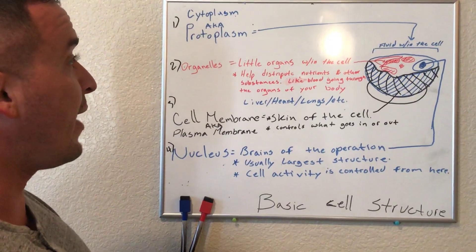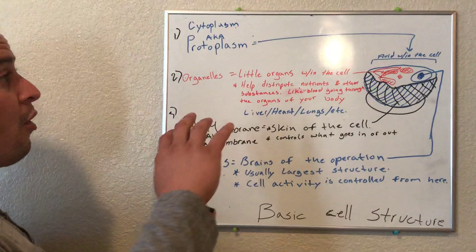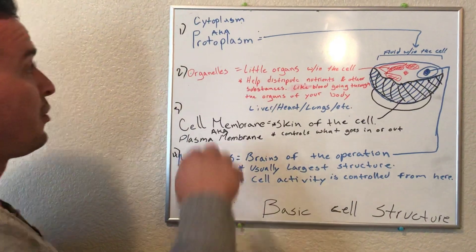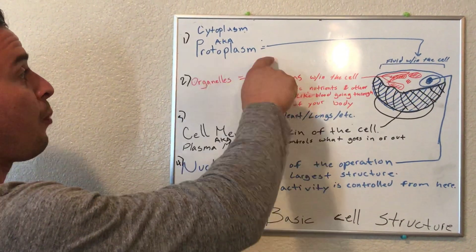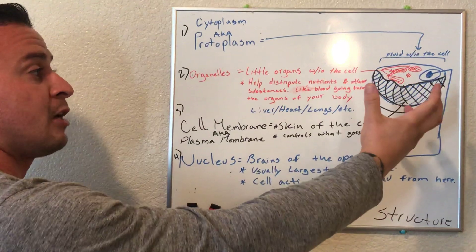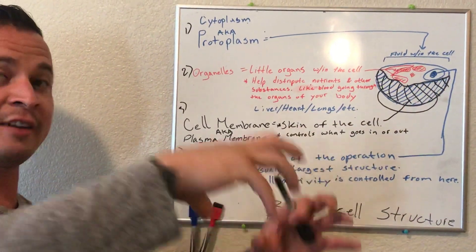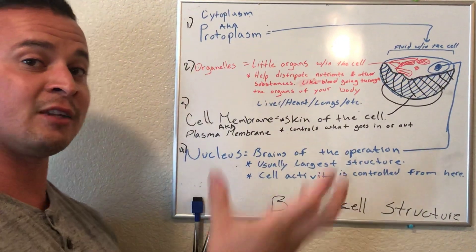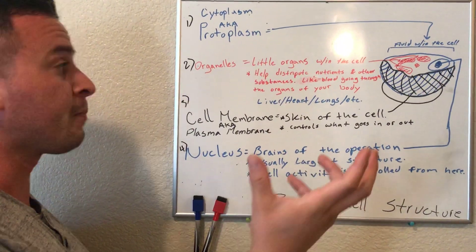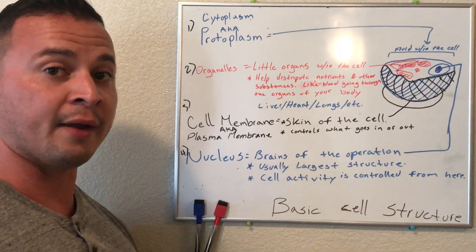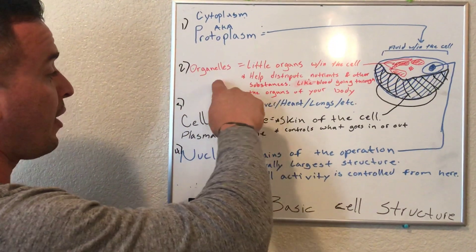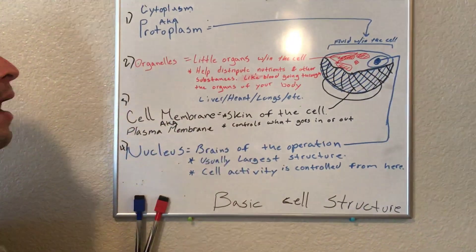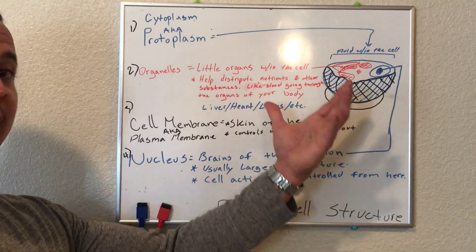Let's go ahead and review one more time. There are four basic components to a cell. You have your cytoplasm, which is a gel-like substance inside the cell where everything is floating around. Then you have your organelles, which are like little tiny organs inside a cell — a cell is like a little body with organs, just like you and I, and they have to function and stay alive. Then you have your cell membrane, also known as the plasma membrane, which acts as the skin of the cell to protect it from the outside environment.